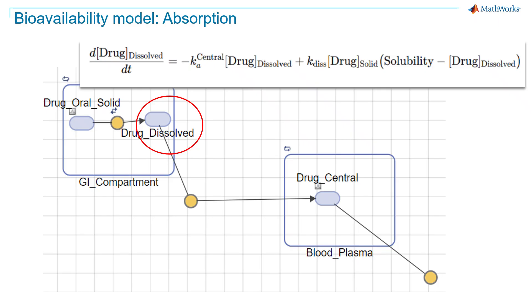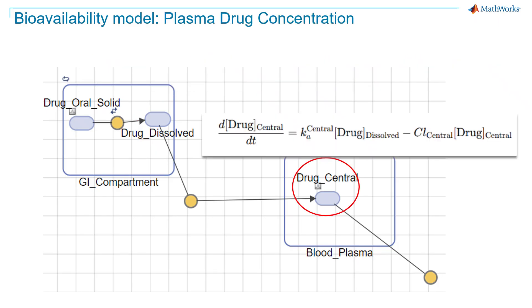The second equation describes how the amount of dissolved drug in the GI tract changes over time with two opposing processes: the input generation term for the dissolution of the solid drug into the GI fluid, and the output, which is the elimination term for the absorption of dissolved drug into the blood stream, which here we call the central compartment, with the absorption rate constant of k_i_central.